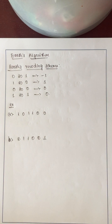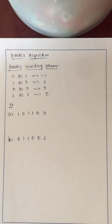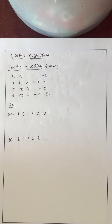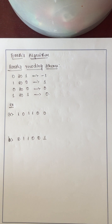Hello everyone. I am going to discuss Booth's algorithm in this session. Booth's algorithm is a powerful algorithm for signed number multiplication. It generates a 2n-bit product, treats both positive and negative numbers uniformly, and can reduce the number of operations.